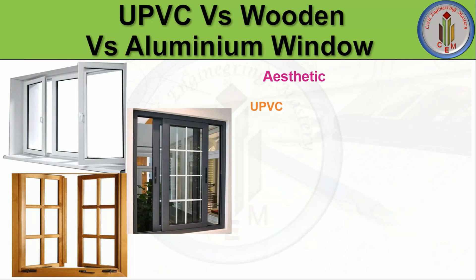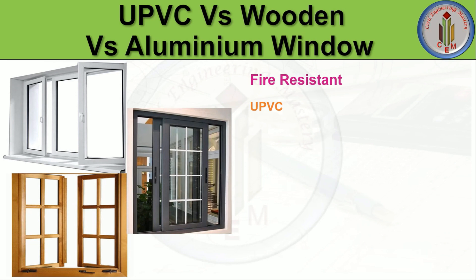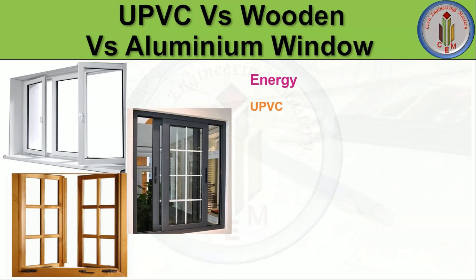For aesthetic purposes, uPVC windows have a bulky and unsightly plastic look that is not very appealing. Wooden windows have an aesthetically pleasing appearance but get damaged if not properly maintained. Aluminium windows are slimmer than uPVC, making them popular in modern buildings. Regarding fire resistance, uPVC windows do not propagate fire. Wooden windows catch fire easily. Aluminium windows have a high melting temperature.